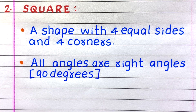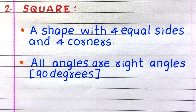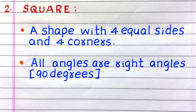The second 2D shape is square. Properties: first, a shape with four equal sides and four corners. Second, all angles are right angles.